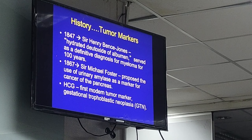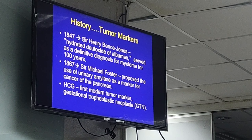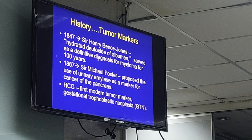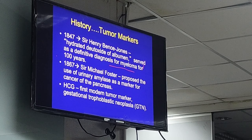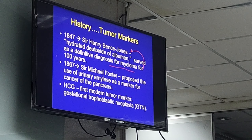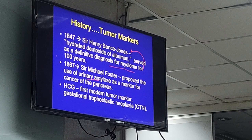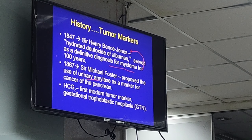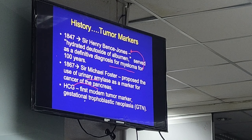Regarding the history of tumor markers: in 1847, Sir Henry Bence-Jones detected a protein that can be used for the diagnosis of multiple myeloma, now called Bence-Jones protein. In 1867, Sir Michael Foster proposed the use of urinary amylase as a marker for pancreatic cancer. Human chorionic gonadotropin is regarded as the first modern tumor marker, used for the diagnosis of gestational trophoblastic diseases.